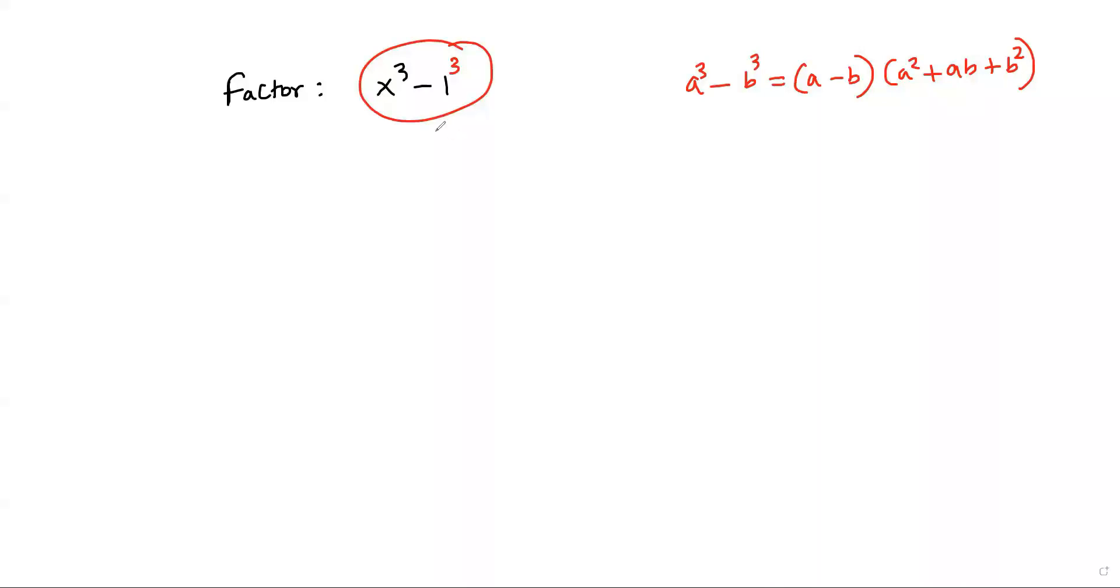Since this expression is in the form of a³ - b³, you can use this identity to factor it. So the factored form is (a - b)(a² + ab + b²).